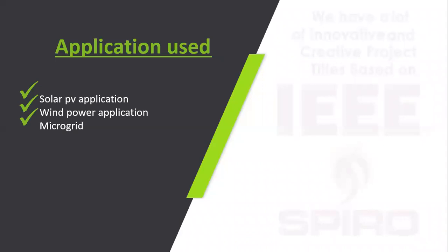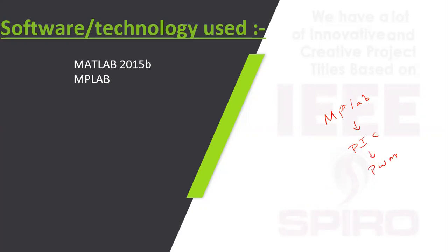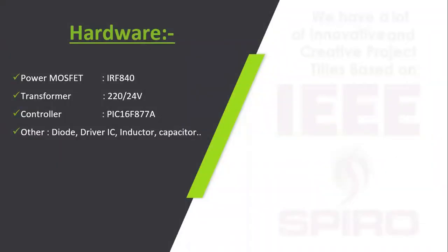For applications, instead of wind power we can also use solar power as the input. It is also suitable for microgrid applications. The simulation is implemented using MATLAB 2015, and for the prototype, a PIC microcontroller is used. The program is written using MPLAB — Microprocessor Lab — which generates the PWM pulse for the PIC controller. The hardware uses a MOSFET, a transformer rated at 220W and 24V, the PIC microcontroller, and other passive and active devices. The main objective is this DC to DC converter with high gain for wind energy conversion system applications.